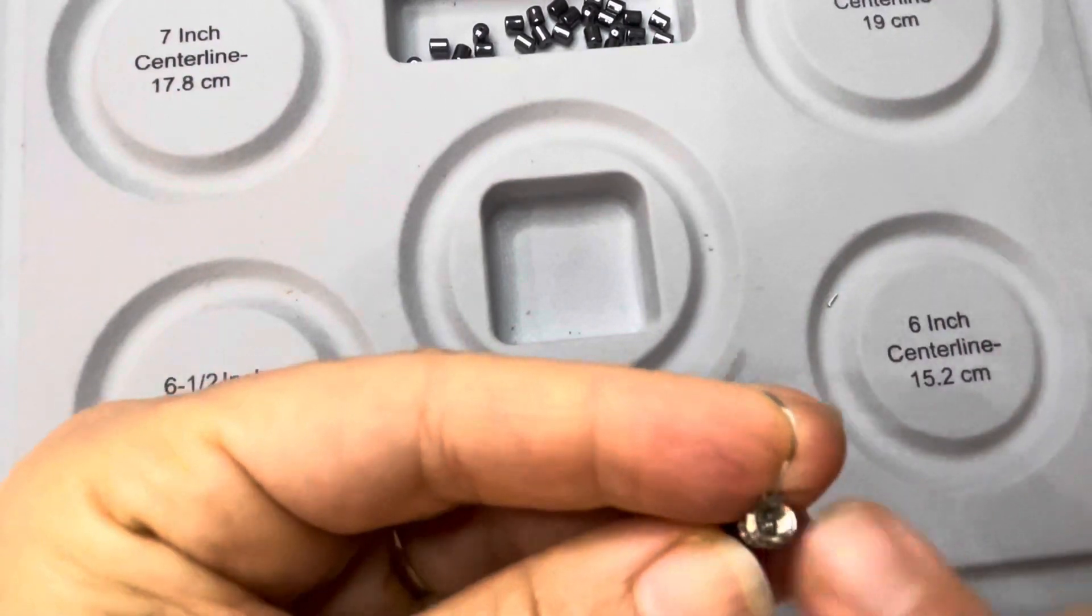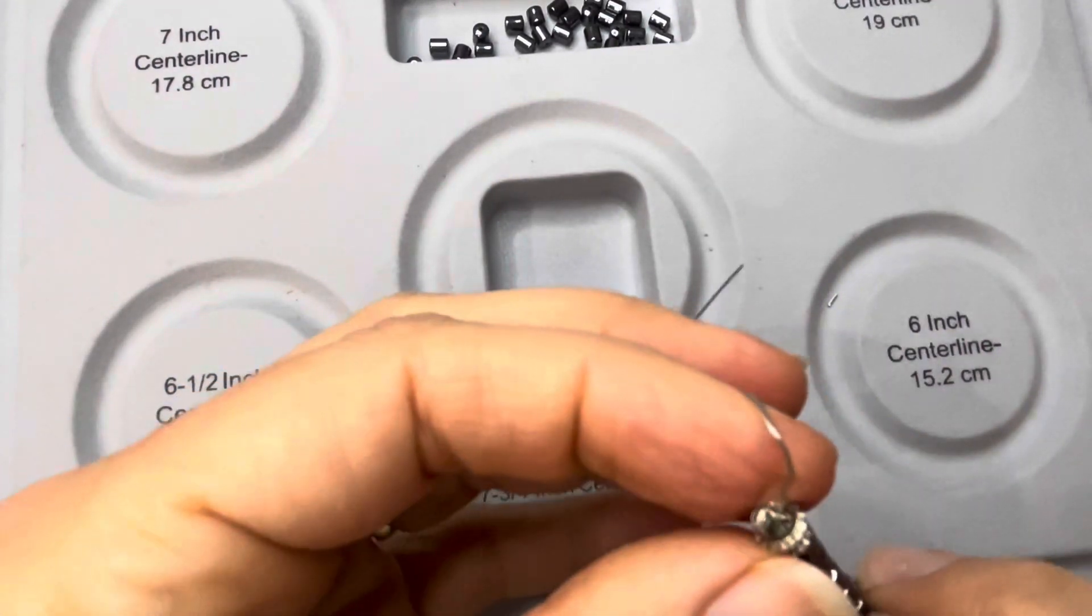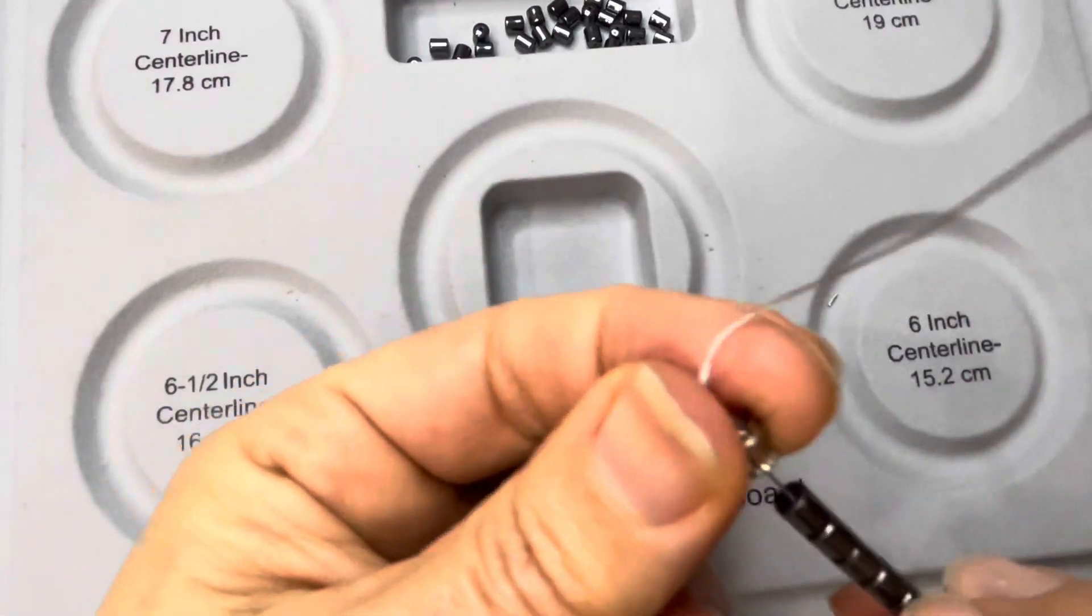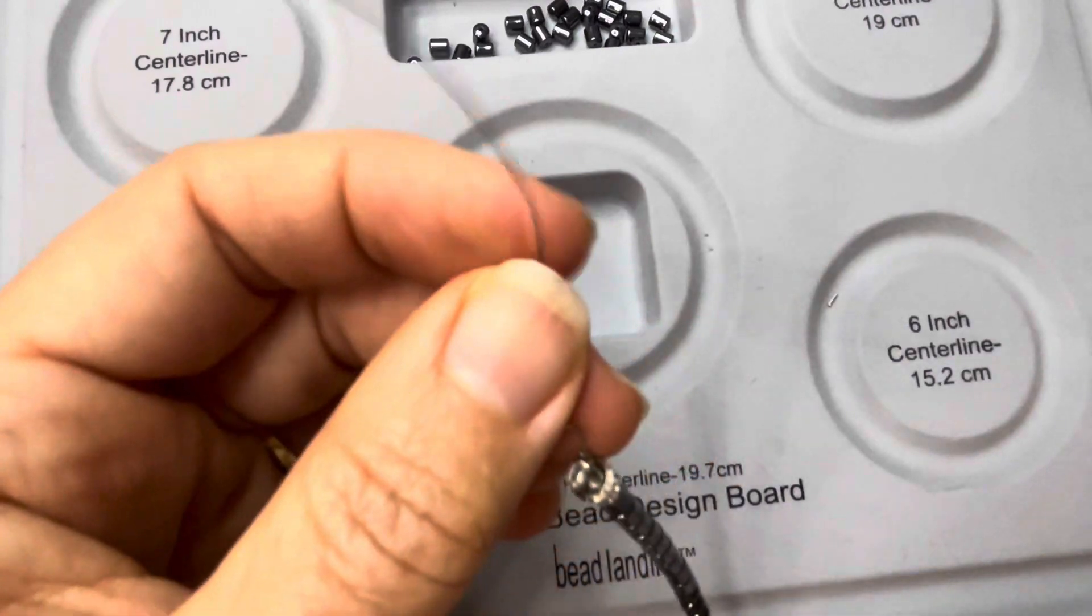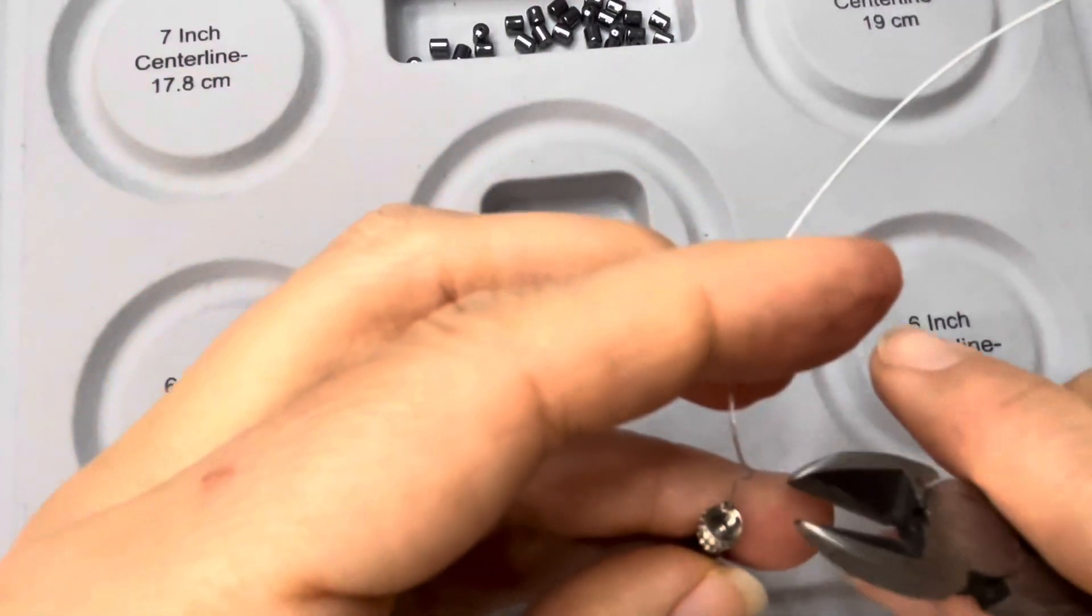This will smash the little bead and flatten it. Once it's flat, it's nice and tight, again bigger than the little hole in there, so it won't go through.